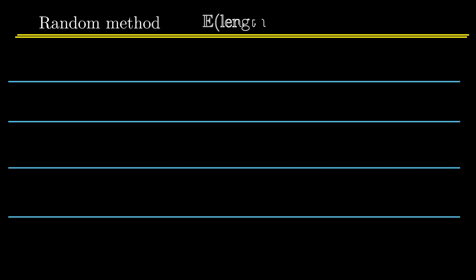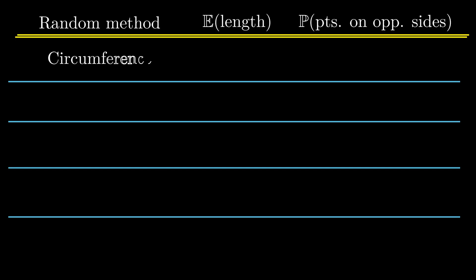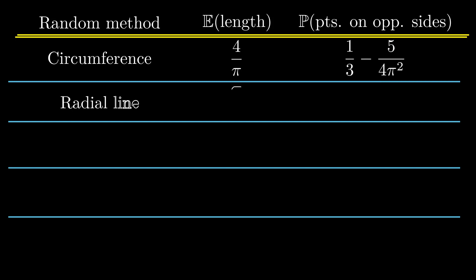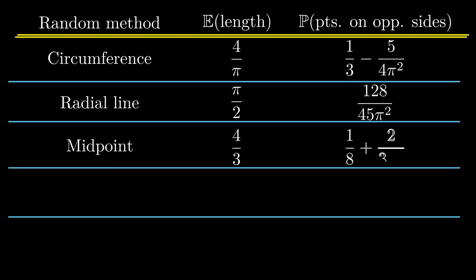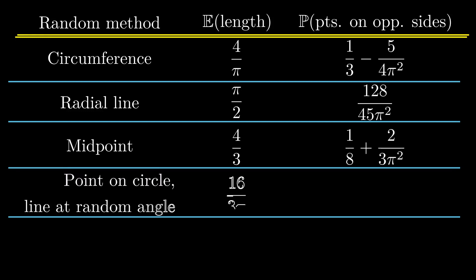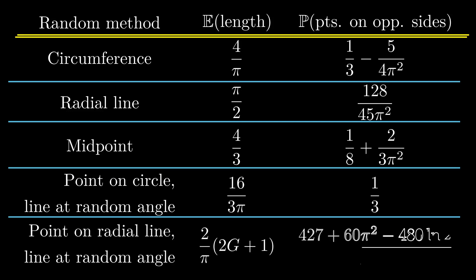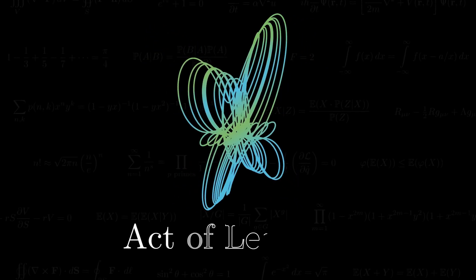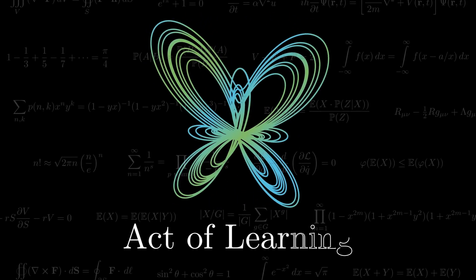To conclude, there is no resolution to Bertrand's Paradox because there is nothing to resolve. What we saw in this video shows that once we make a specific choice on the random method, the probabilities and the expected values are clearly defined. It's just the lack of clarity about the randomness in the question that creates the apparent paradox. Thanks for joining me and see you in the next video.